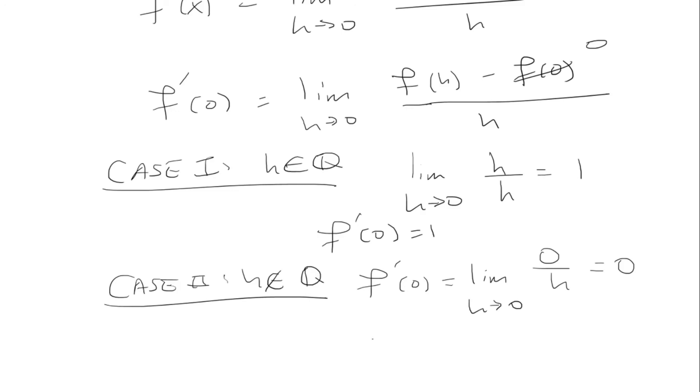So here we're saying that the derivative is 0. But in the previous case, we said it was 1. So because these two are not the same, we say that it's not differentiable. So f prime of 0 does not exist, and f is not differentiable at x equals 0.